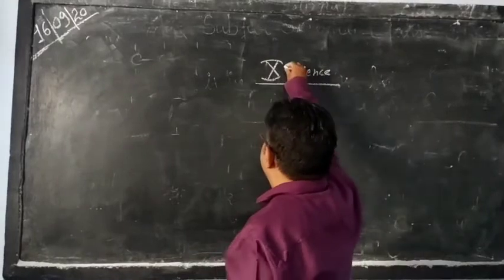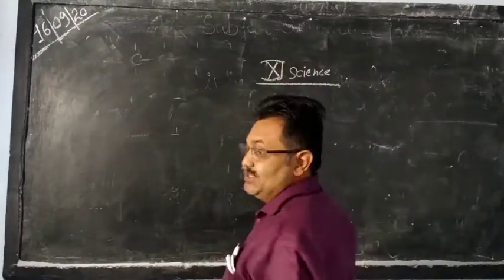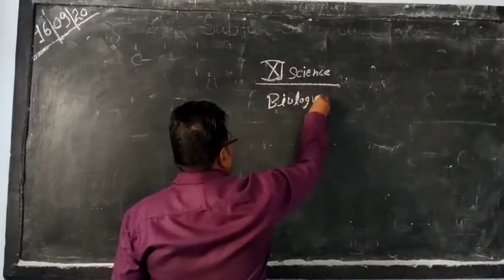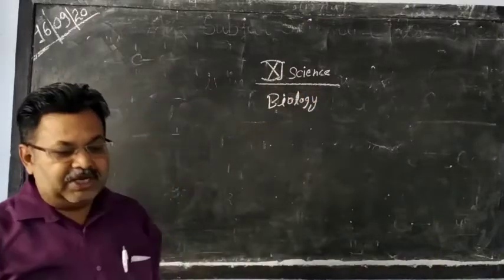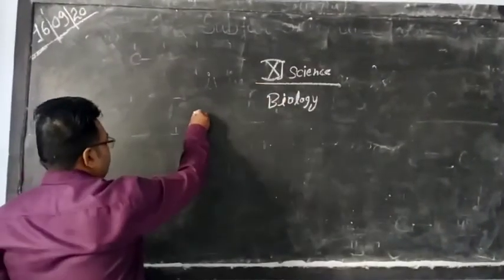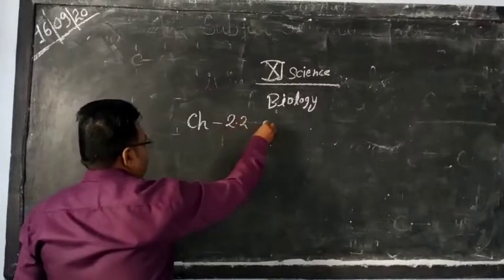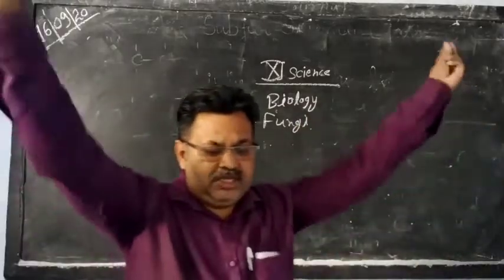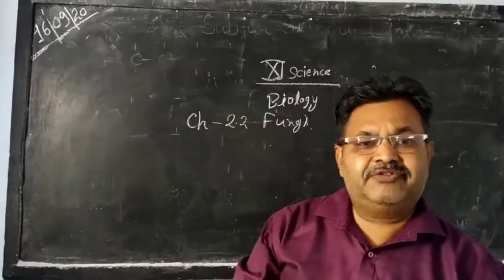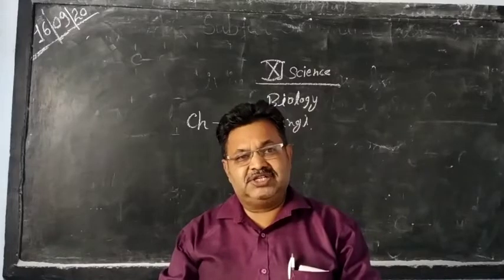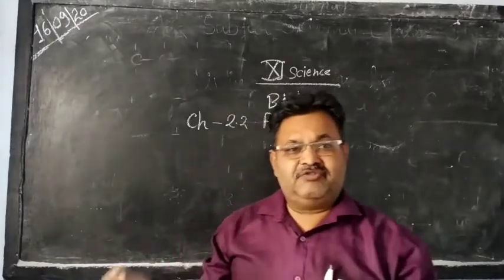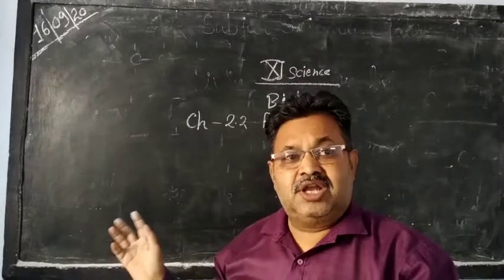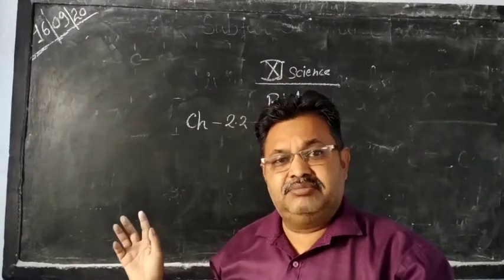Good morning. This is your 11th science biology class and we have to take Chapter 2.2 Fungi. Fungi is another kingdom of the five kingdom classification system. We have discussed in our earlier classes the five kingdom classification. The first one is Monera and the second one is Protista. Now we are discussing the third kingdom, which is Fungi.